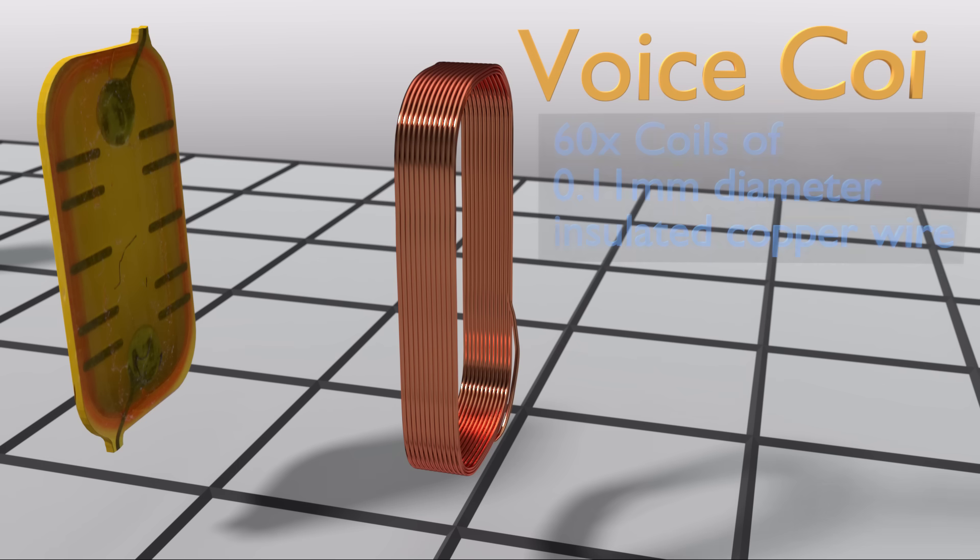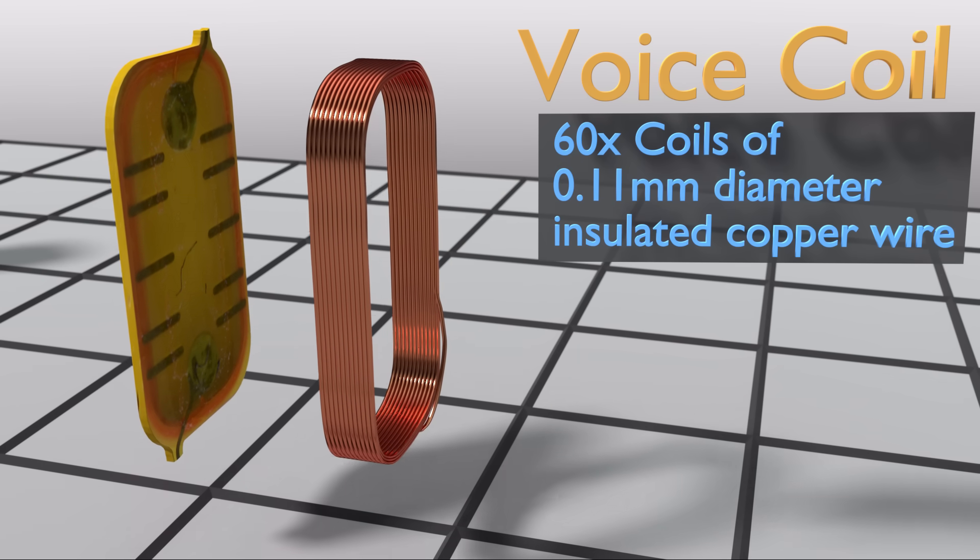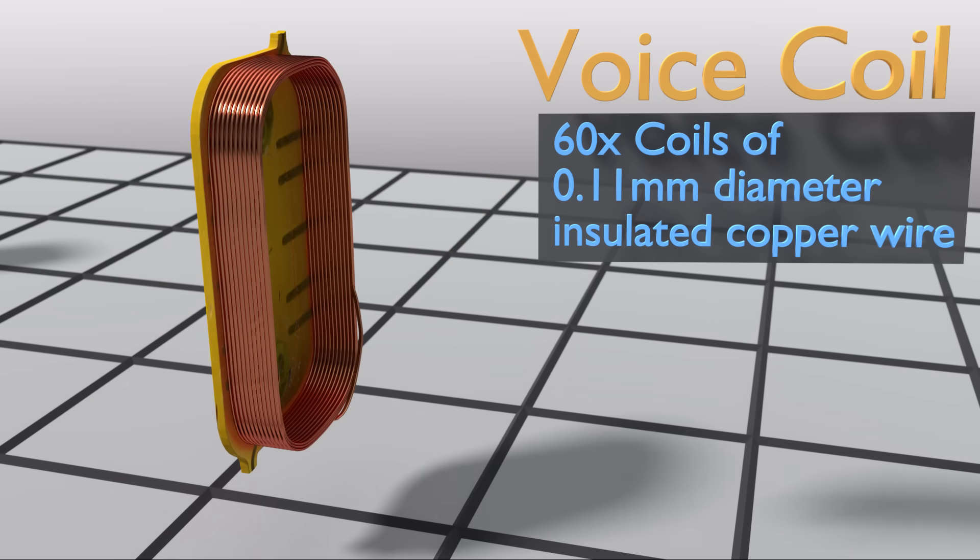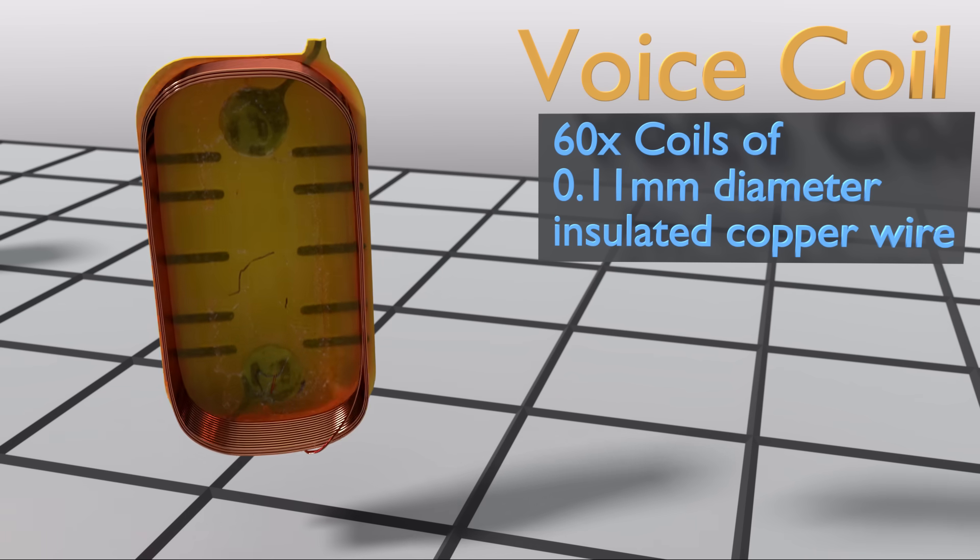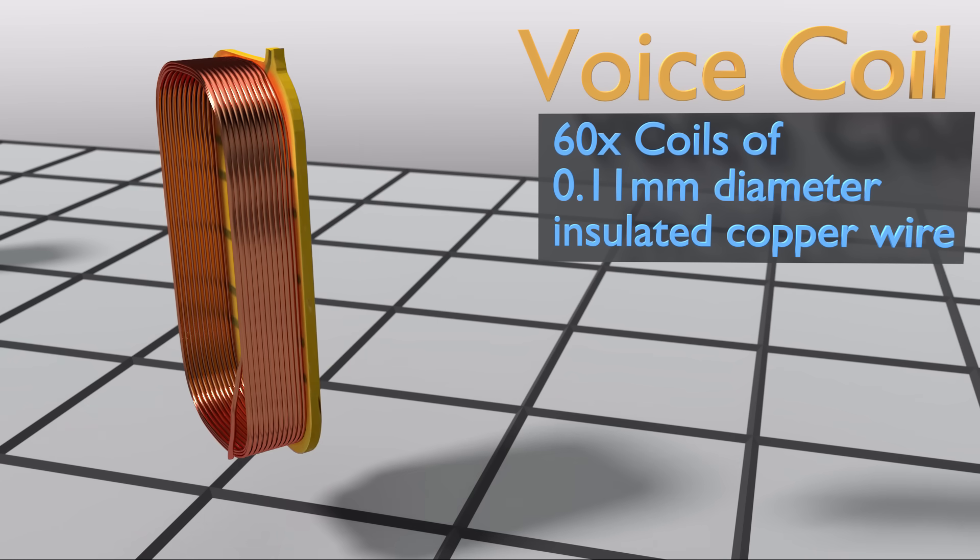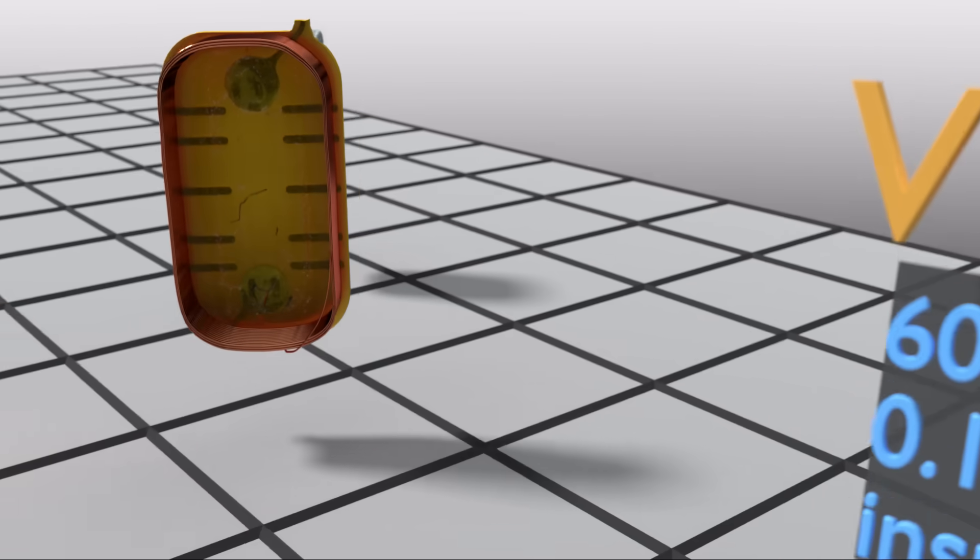The voice coil is firmly mounted to the diaphragm, and it is constructed from a coil of insulated copper wire. The diaphragm and coil are positioned around the third component, the magnet.